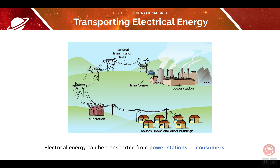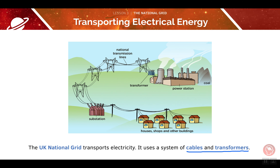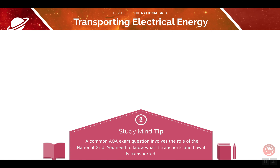Electricity is produced in power stations but it is used in other buildings such as homes, offices and supermarkets. In other words, we have to transport this electrical power from the power stations to the consumers. The national grid does this by using a system of cables and transformers. You need to know about the national grid's role for AQA exams, as it is a common topic for exam questions.